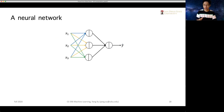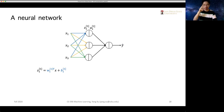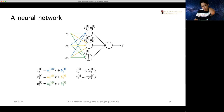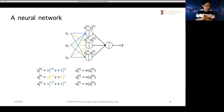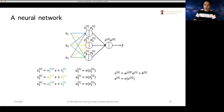We organize those neurons into layers, and we stack those neurons in each layer vertically. In each layer, we have a superscript number to indicate the layer number. So in this case, we use the integer number one in superscripts within square brackets to indicate this is layer one. And for layer two, we just increase that layer number.